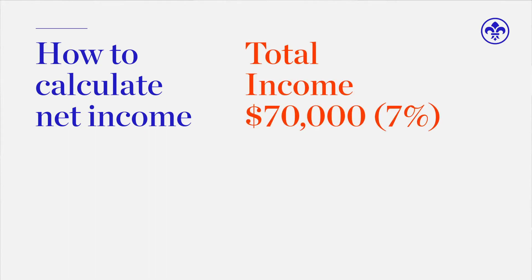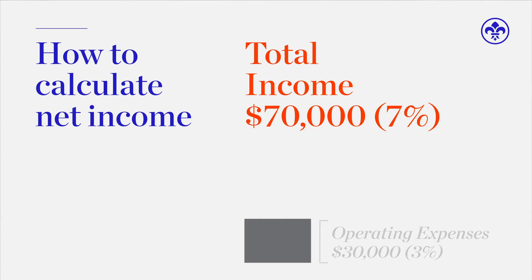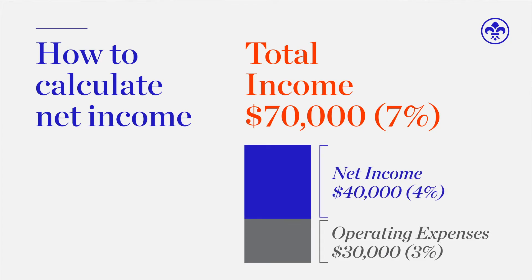To use some simple numbers: if you've got a million dollar investment property at a seven percent gross yield, that works out to $70,000 a year in income. You might have $30,000 worth of operating costs, leaving $40,000 of income that you can use. Investment properties are properties that you can rent out, and this doesn't include your family home — because while your home is an asset, it's not a true asset because it doesn't generate an income.